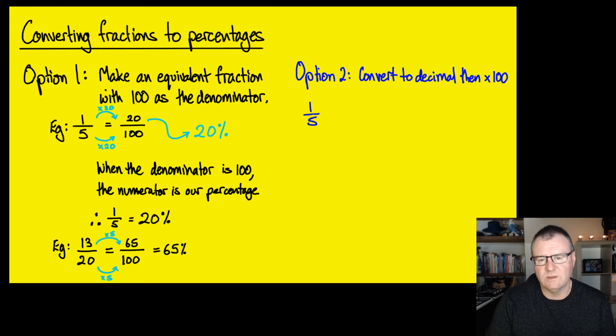One fifth is what we started with. Now, I know from previous work that a fraction is division. So 1 over 5 means 1 divided by 5. I do that in my calculator, so I just go 1 divided by 5, and I get an answer of 0.2. I take that 0.2 now,